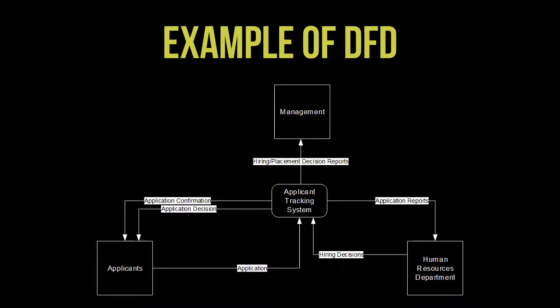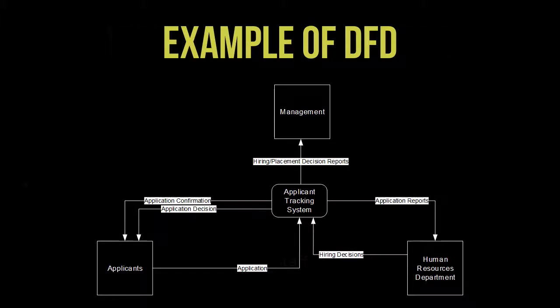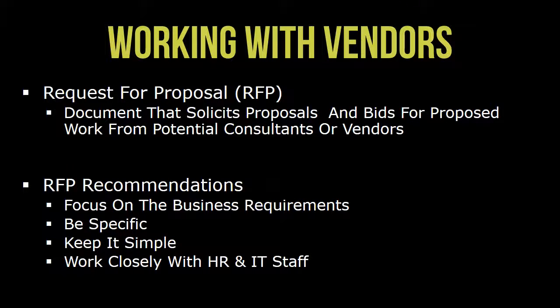With those definitions in mind, the four elements come together to represent a business process — in this example, an applicant tracking system. Now with an understanding of data flow diagrams, let's switch gears to working with vendors.